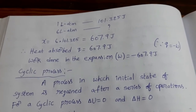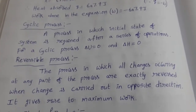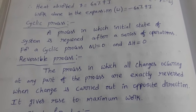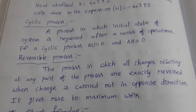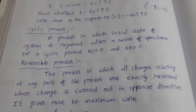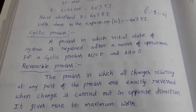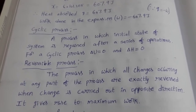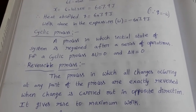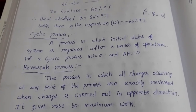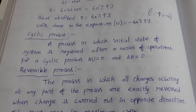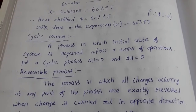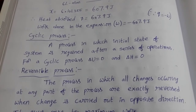Now, reversible process: the process in which all changes occurring at any part of the process are exactly reversed when the change is carried out in the opposite direction. If a process is taking place in different steps and at any step we change the reaction conditions in the opposite direction, then that process is carried out in reverse — that is called a reversible process.